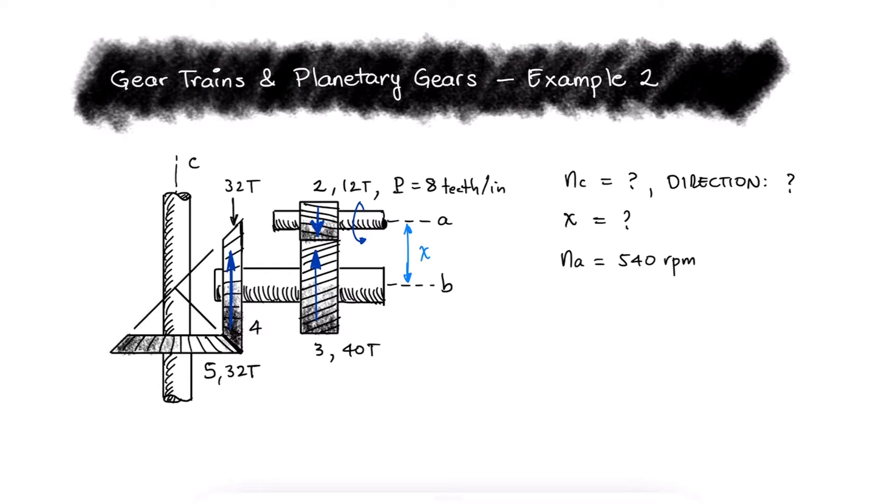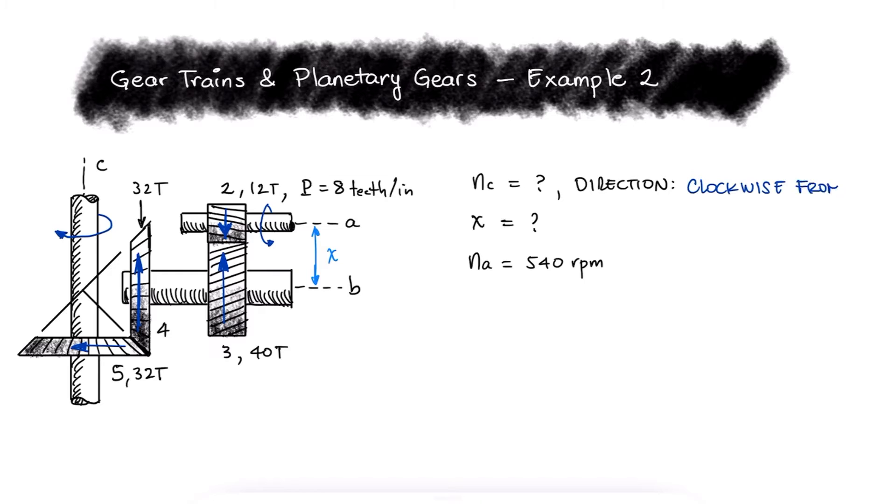The teeth that are in contact from gear 4 and gear 5 will be coming out of the screen, meaning that the front face of gear 5 is rotating towards the left. Shaft C is rotating with gear 5, which means that gear C is rotating clockwise when seen from the top.